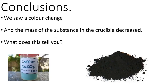Some of the observations that we should have seen — the most obvious one is that we saw a colour change, going from a bluey-green-turquoise colour to black. So like this on the left to this on the right. And the answer to what happens to the mass is that the mass of the substance in the crucible has decreased. So the mass of this black solid on the right-hand side will be less than the mass of the green solid on the left-hand side.